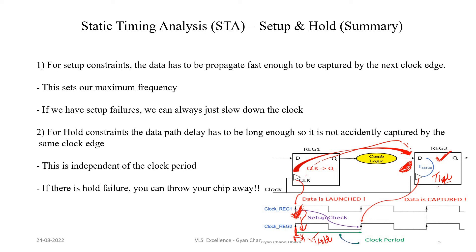This is independent of the clock period. The hold equation, as we covered in the previous chapter, is independent of the clock period, and hence the hold check does not depend on the clock period of the capture or launch flip-flop clock. So if there is a hold failure, unlike setup where we can increase the clock period to avoid failure, in hold conditions we cannot mitigate the hold failure by increasing or decreasing the clock period. And hence you can directly go ahead and throw your chip away — that chip cannot work in a real scenario.